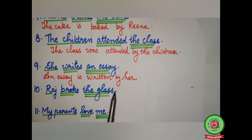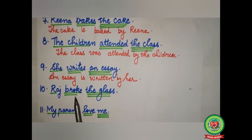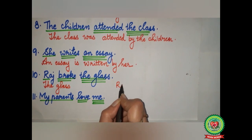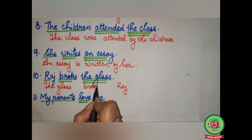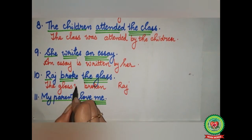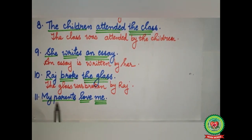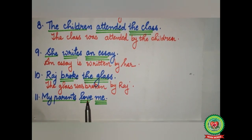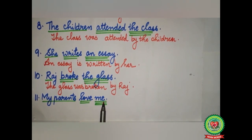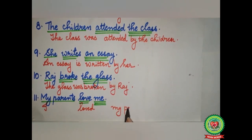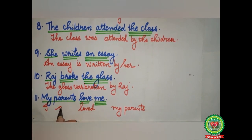Sentence ten: 'Raj broke the glass.' Raj — subject, single underline. 'Broke' — double underline. The glass — triple underline. The glass will come in the beginning, Raj will go to the last. 'Broke' will change into its V3 form 'broken.' 'Broke' is past form, so we add 'was.' Answer: 'The glass was broken by Raj.' Last sentence: 'My parents love me.' My parents — subject. 'Love' — verb. 'Me' — object. 'Me' will come in the beginning and become 'I,' love will change into 'loved,' my parents will go to the last. With 'I' we use 'am.' Answer: 'I am loved by my parents.'